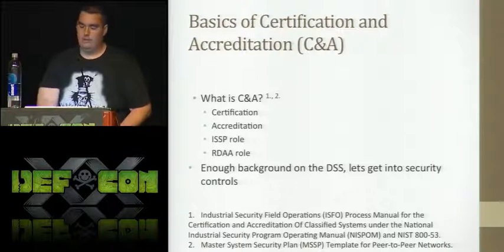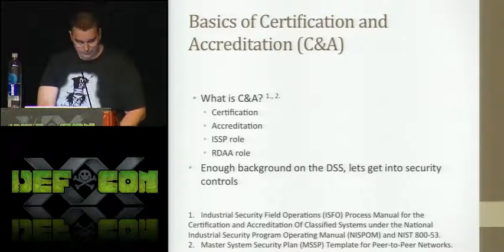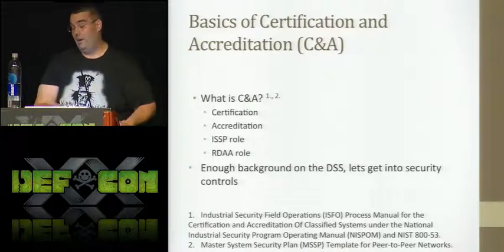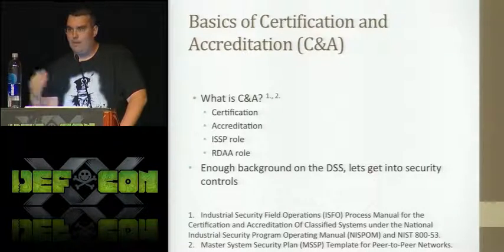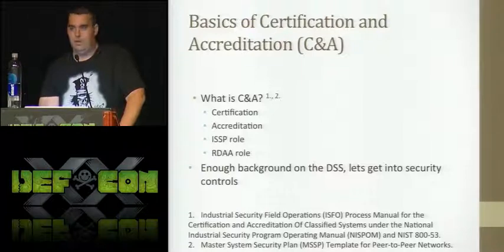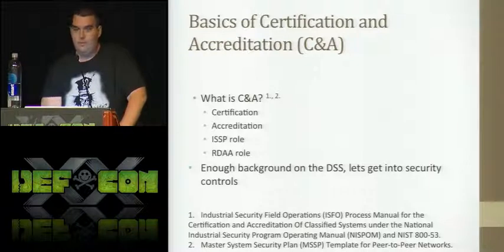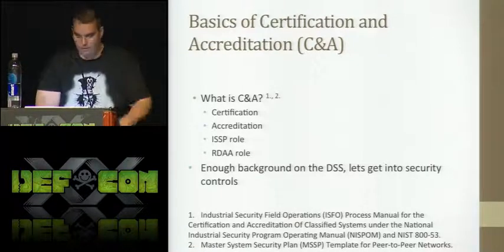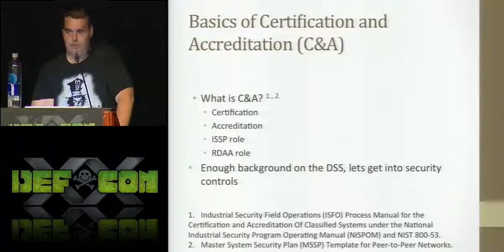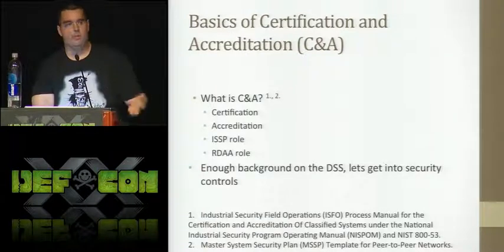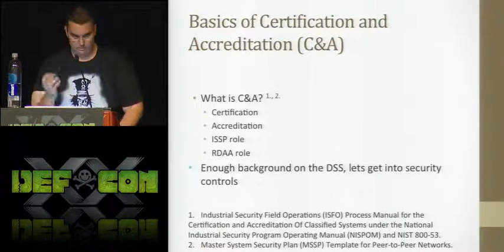After approval, the contractor can start processing secret information for up to six months without any oversight — no validation of whether security controls are in place; it's just based on their trustworthiness. They can also request an extension for another 180 days. When working with a company, I'm only working with one person designated as the Information System Security Manager. I've seen cases where that person graduated with a master's in business, worked at Enterprise Rent-A-Car for a year, and was appointed ISSM with no security experience — yet they're ultimately in charge of a Fortune 500 company running thousands of computers processing top secret information.